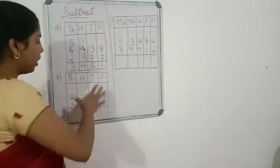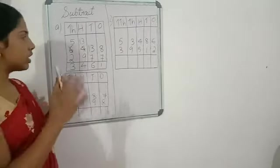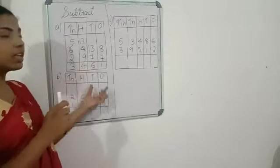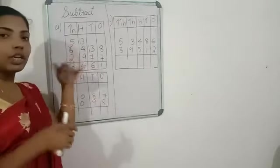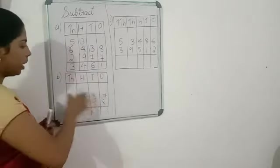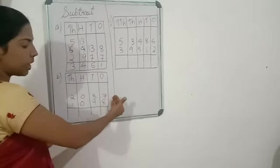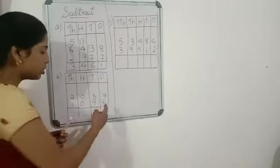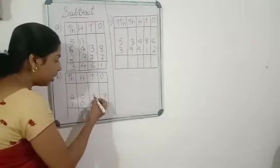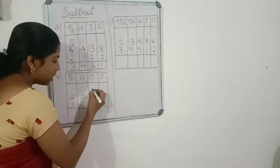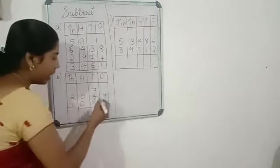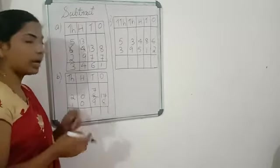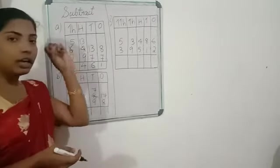Let us move to the next question. All the questions we have done previously are the same — the difference is that the previous ones were given in column form, and for those we draw the column. Here also, we start subtracting from the ones place. Seven minus eight is not possible, so we borrow one from the tens place. The eight becomes seven and the seven becomes seventeen.